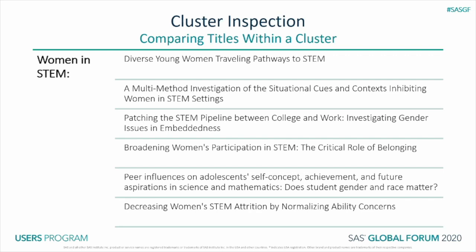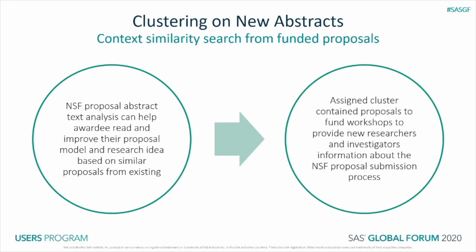This research aimed to group new proposals with previously funded proposals based on similar context, so it is very important that the model can process new text, allowing reviewers to quickly retrieve similar proposals to help scale their manual efforts and improve review quality. To test this, we vectorized and clustered the abstract associated with this very study. It was interesting to see what we found: the cluster it was assigned to contained NSF funding proposals for workshops to provide new researchers and investigators with information about the NSF proposal submission process. This was a successful demonstration of our model's performance.